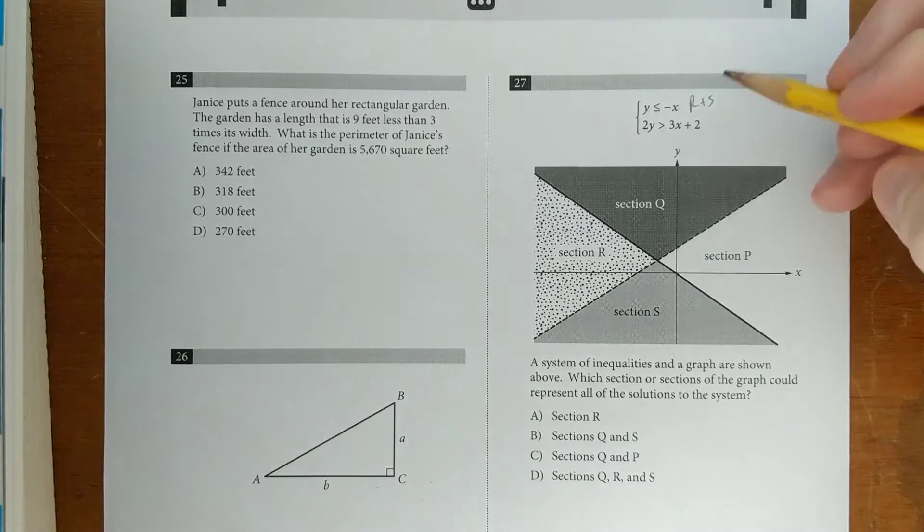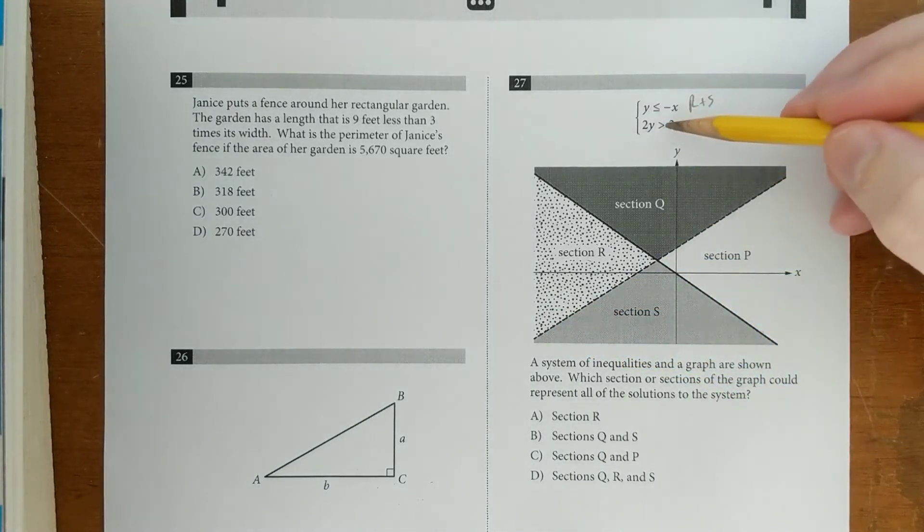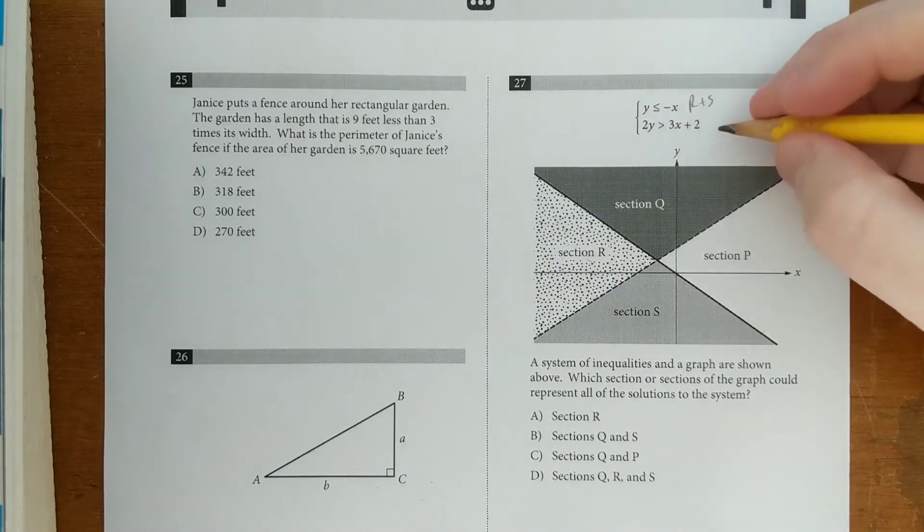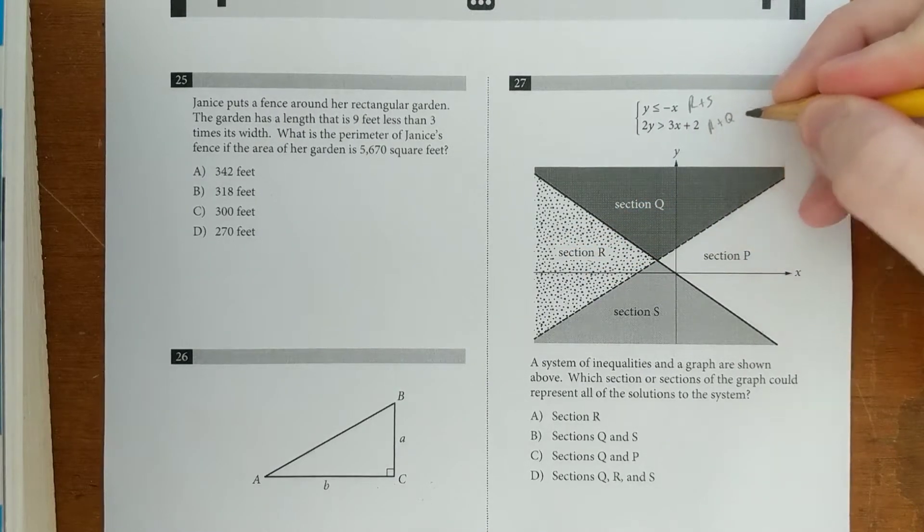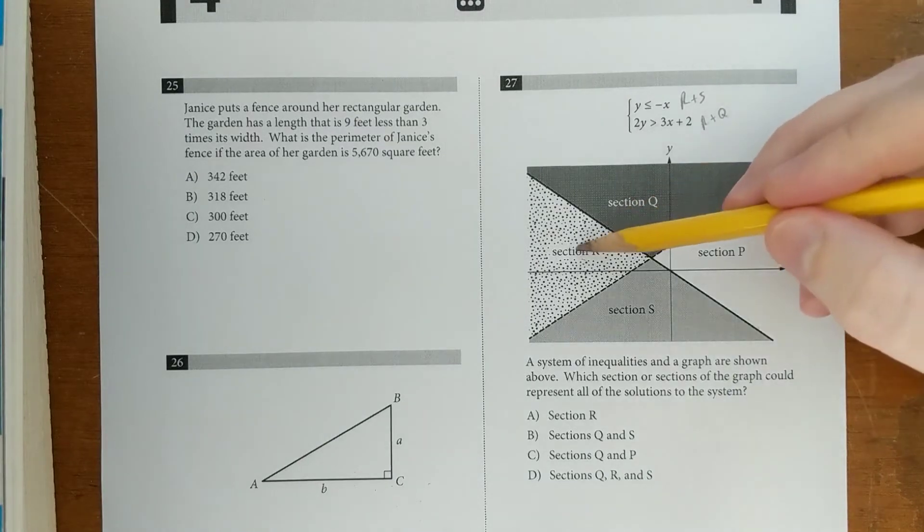Let's move on to the next one. So if you divide everything by 2, you're going to end up with a positive slope and a positive y-intercept. That means we're talking about this line. Anytime it's greater than or greater than or equal to, you're shading above it. So this one is talking about sections R and Q. The solution is where they overlap. In this case, that's section R.